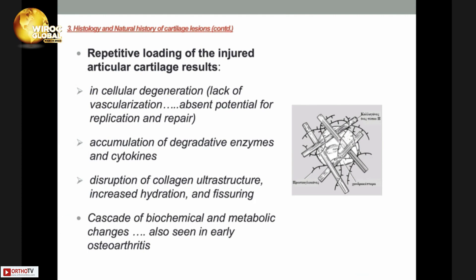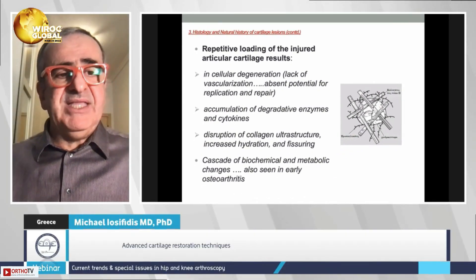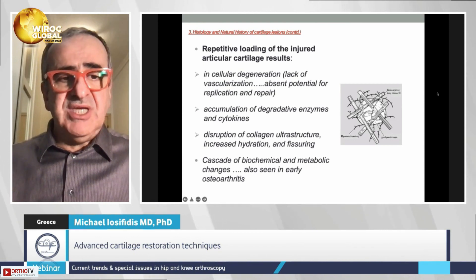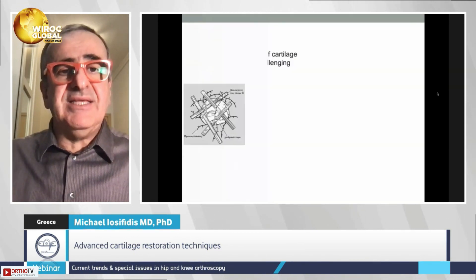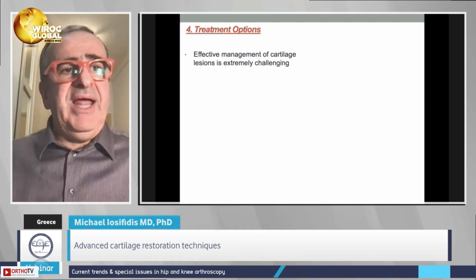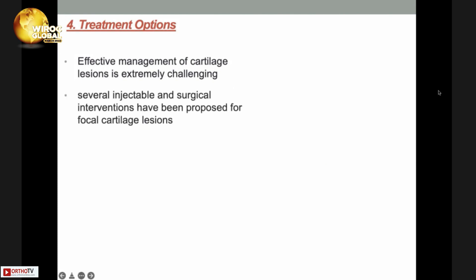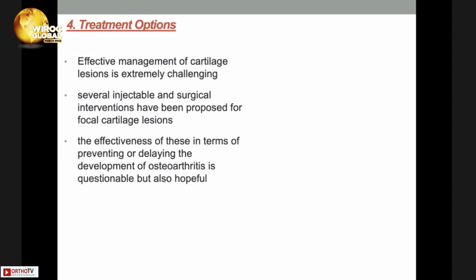This cascade of biochemical and metabolic changes is also seen in early osteoarthritis. Effective management of cartilage lesions is extremely challenging. There are several injectable and surgical interventions which have been proposed for focal cartilage lesions, though their effectiveness in terms of preventing or delaying the development of osteoarthritis is questionable but also hopeful.